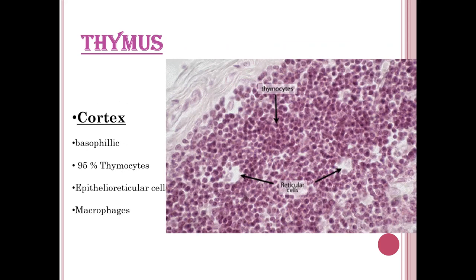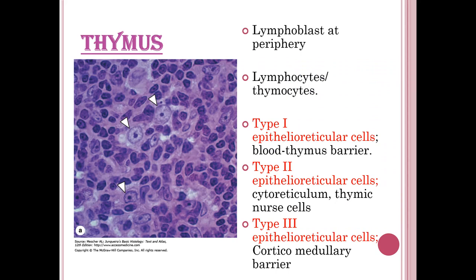The cortex is visible with basophilic dye. Thymocyte cells occupy approximately 95% of the thymus gland area. Epithelial reticular cells and macrophages are also present. Lymphoblasts are situated at the periphery. Type 1 epithelial reticular cells form the blood-thymus barrier. Type 2 epithelial reticular cells form the cytoreticulum and act as thymic nurse cells.